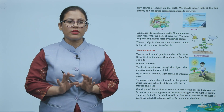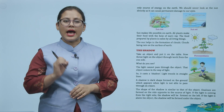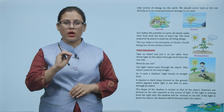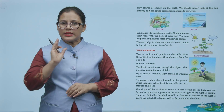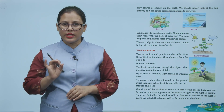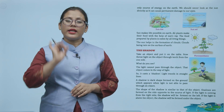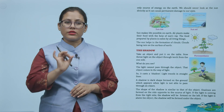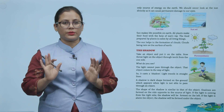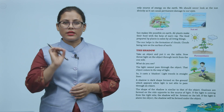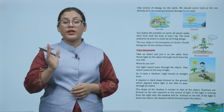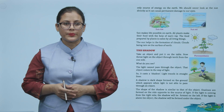We should never look at the sun directly as it can cause permanent damage to our eyes. Sun ki jo energy hai, usse solar energy kehte hai and yeh ekloti source of energy hai earth pe. Hameh sun ko directly nahi dekhna chahiye because it can damage our eyes.